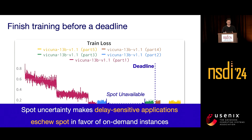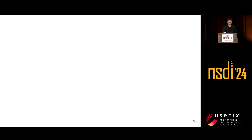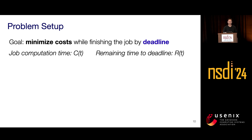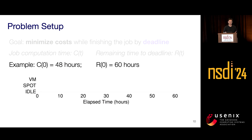That motivates our research into using both spot and on-demand instances for deadline-sensitive applications. We formulate the problem: we want to minimize the cost for a job with a specific deadline. We denote the remaining computation time at timestamp T as CT and the remaining time to deadline as RT. In the running example where C0 equals 48 hours and the deadline R0 is 60 hours, we want to finish a job requiring 48 hours of computation before a 60-hour deadline.